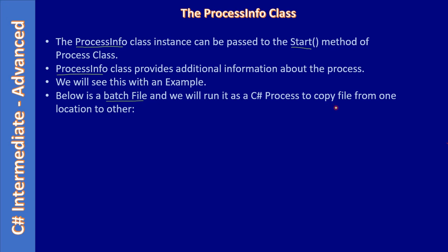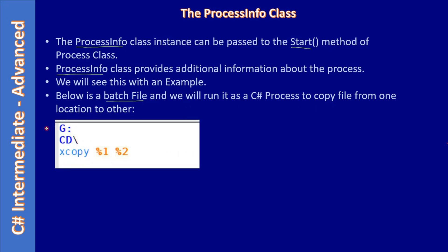In our sample application we already have two text boxes to specify the source and destination location of the file or folder. The content of the batch file is simple — it moves the folder location to G drive, then performs an xcopy operation. There are two arguments for this batch file. xcopy is simply a DOS command, and this DOS command takes two parameters: percentage one (%1) denotes param one and percentage two (%2) denotes param two. We will send these two parameters from our C# application.